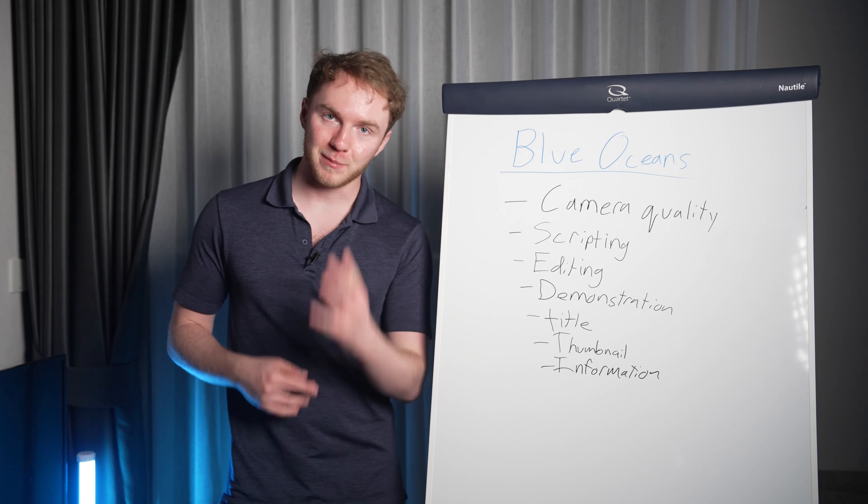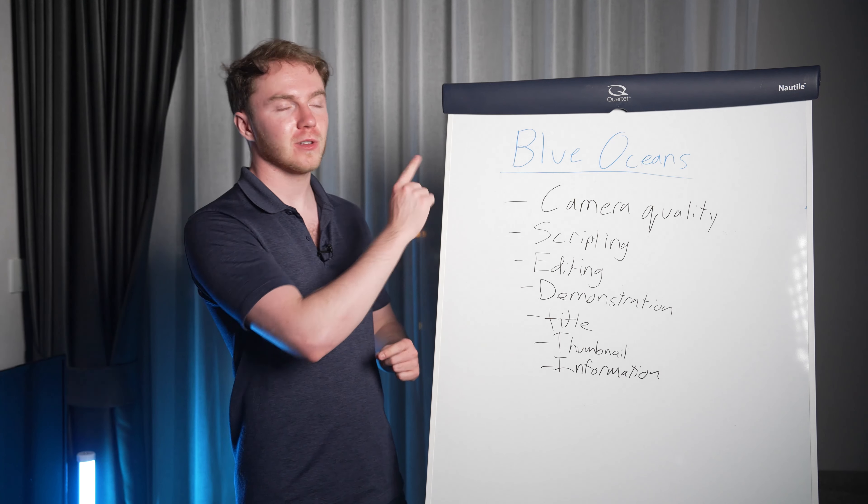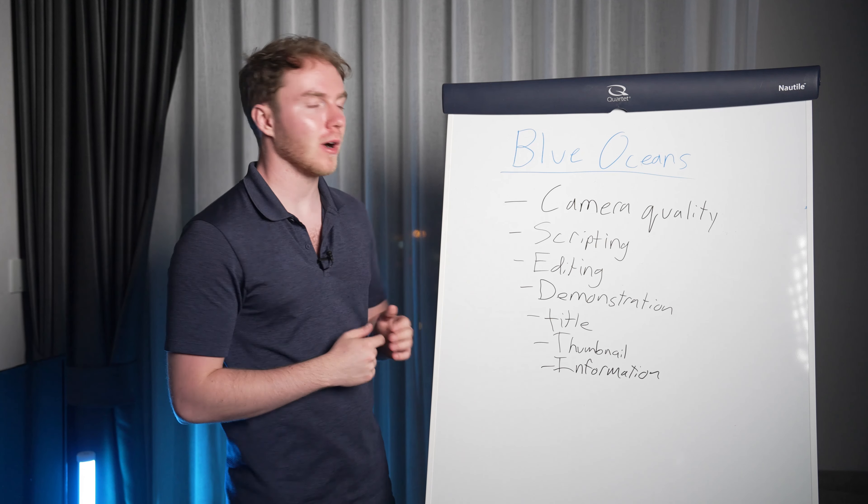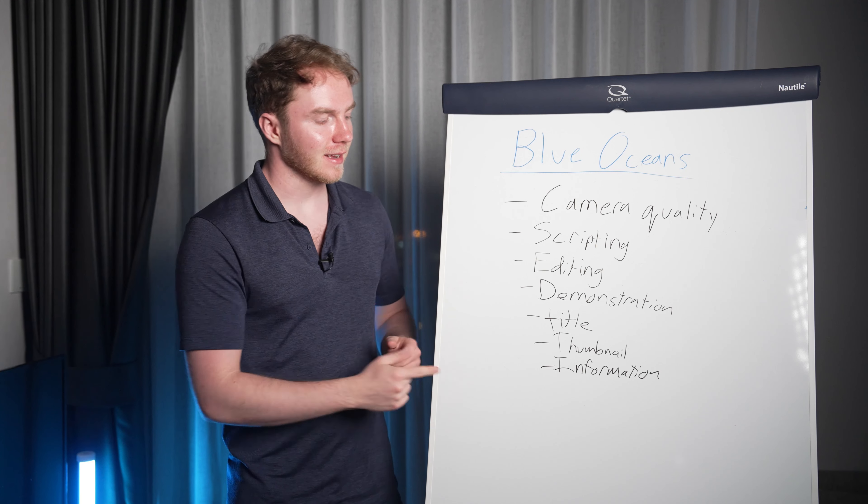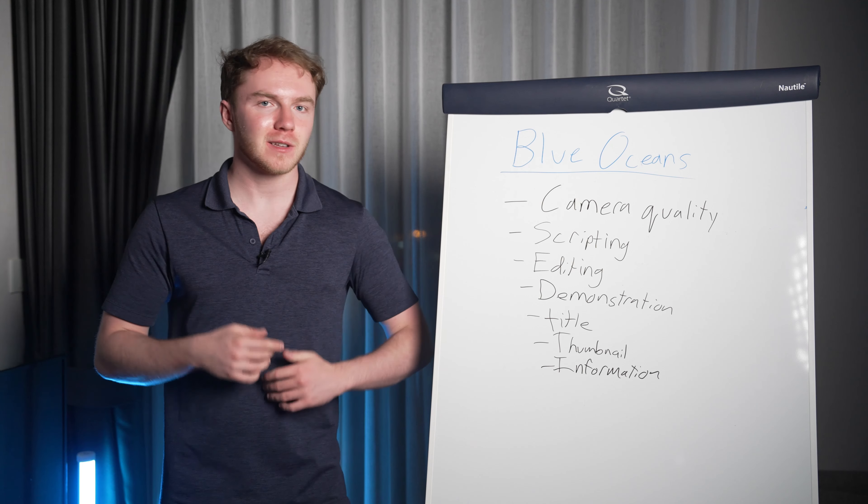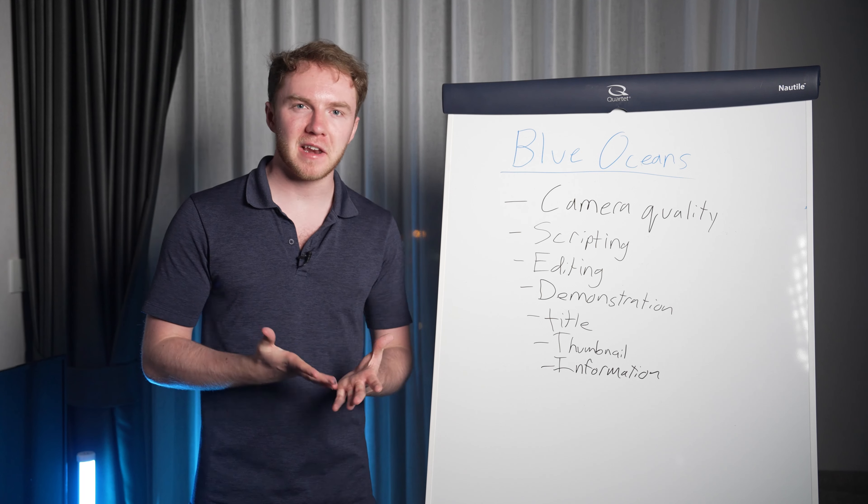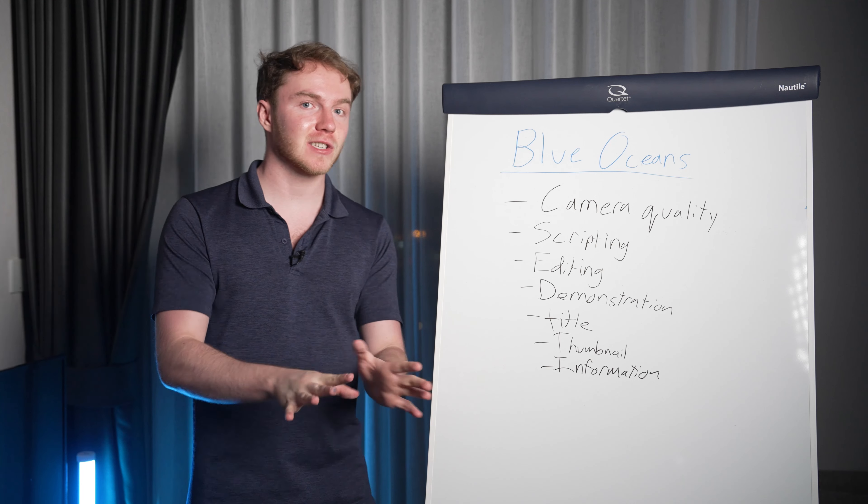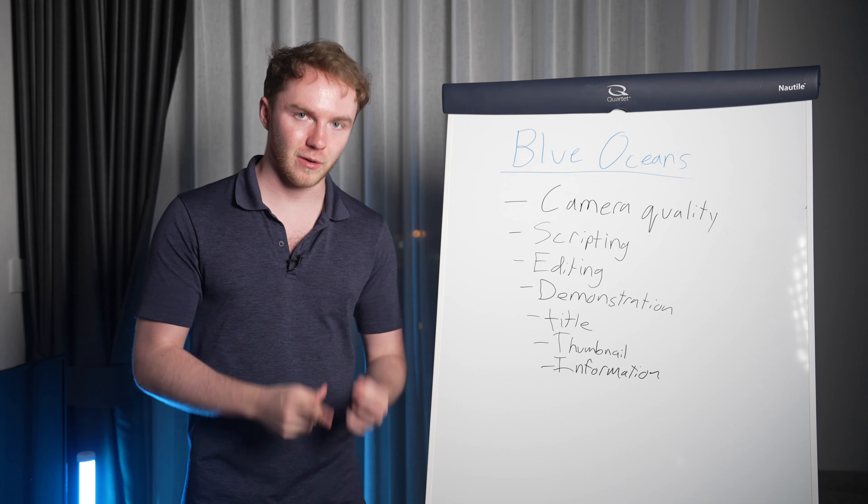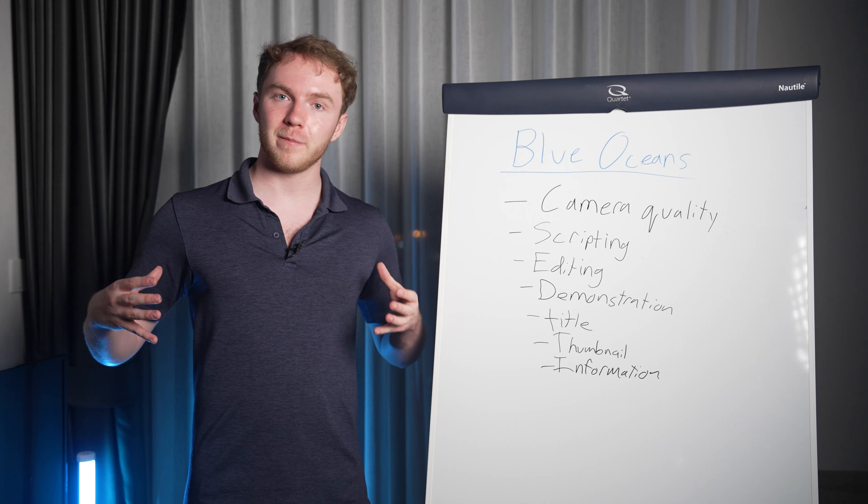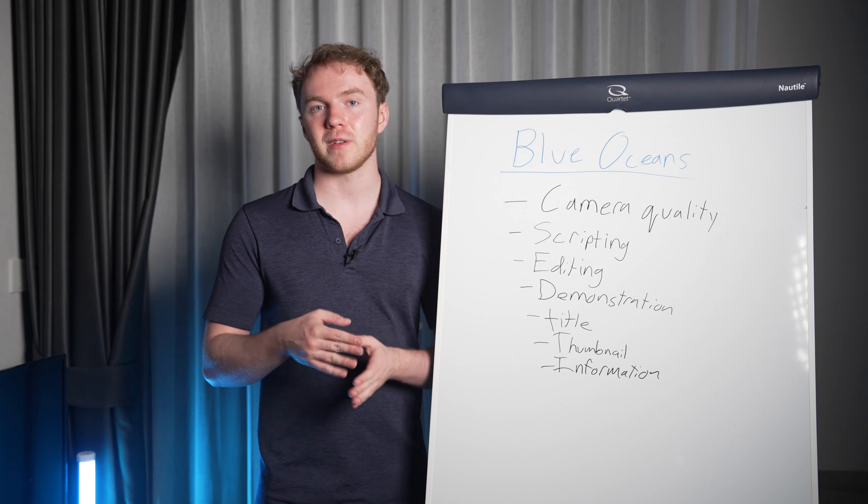So how do you create a blue ocean? Well, first, you're going to look at all of the factors in your niche. For example, in my niche, we have camera quality, scripting, editing, demonstration, title, thumbnail, and information. That's about most of the elements in my space, right? That go into making a video. And you're essentially going to write down everything that does go into making a video in your niche currently. Because to be honest, most niches are in red oceans, meaning the majority of people making content in that niche do something very similar.